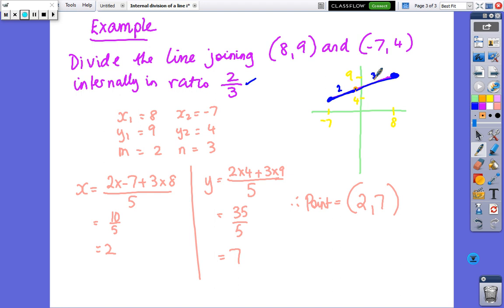Okay, so what I've done is I've written x1 is 8, x2 is minus 7, y1 is 9, y2 is 4. m is 2, n is 3. So, in the formula, it's going to be m times x2 plus n times x1 over m plus n.